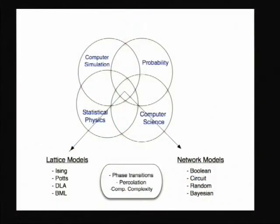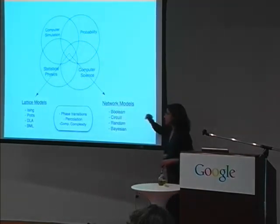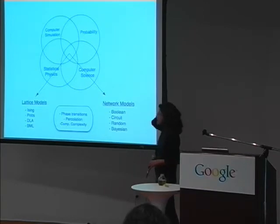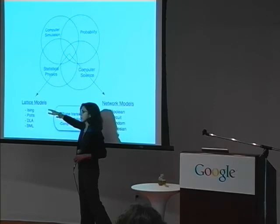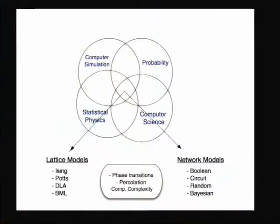I want to talk about the intersection between probability, statistical physics, and computer science as a discipline distinct from computer simulation. They have overlap but are very different things. This intersection is really rich and has a lot of interesting shared phenomena and shared techniques. Going out along the computer science line, we're unified by network models — Boolean networks, circuit networks, Bayesian networks, random networks. Going toward the statistical physics axis, we think about lattice models like the Ising model, the Potts model, diffusion limited aggregation. Common phenomena like phase transitions and percolation unify all these things, along with tools like computational complexity theory.